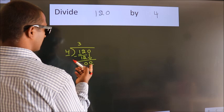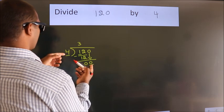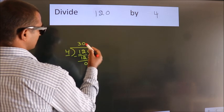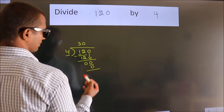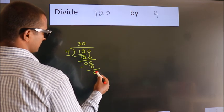When do we get 0? In the 4 table. 4 times 0, 0. Now we subtract. We get 0.